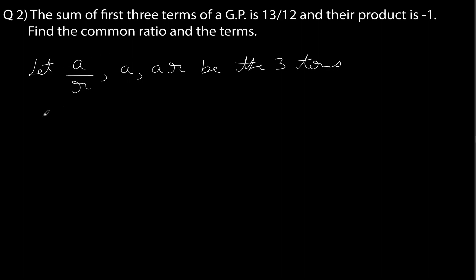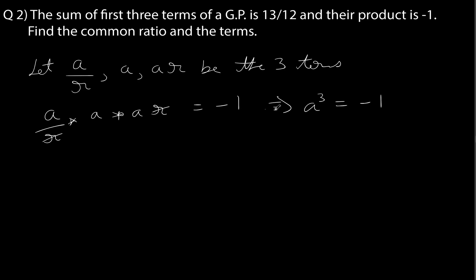Let's look at the product first. The product of the three terms is minus 1, so a/r multiplied by a multiplied by ar equals minus 1. The r in the numerator and denominator cancel, leaving a cubed equals minus 1. Considering only real roots, a equals minus 1. Using this trick, we very easily find the first term a, since the r cancelled and we got an equation in one variable.